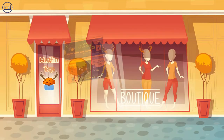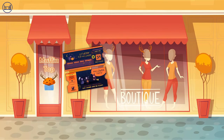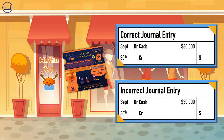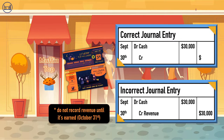Suppose Muffintop sells tickets to next month's Halloween charity event called Moose Bumps. It collects $30,000 in cash, so it debits cash for $30,000, and mistakenly credits revenue for $30,000. The company shouldn't record this as revenue until they actually earn it — that is, when they throw the event. Instead, they should have credited unearned revenue, a liability account that signifies that Muffintop has yet to earn this revenue until they throw the event.